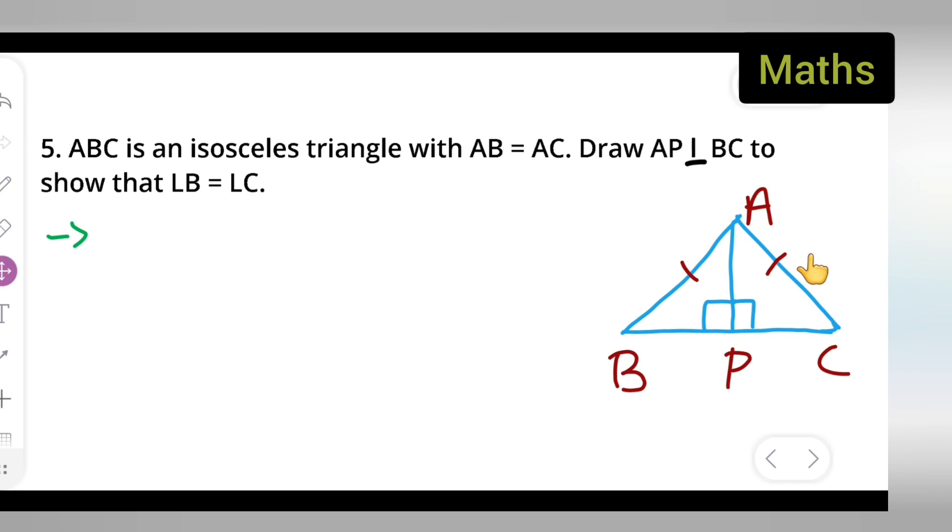Now let's see. First, I have to take these two triangles. First triangle is APB and APC. So take in triangle APB and triangle APC.